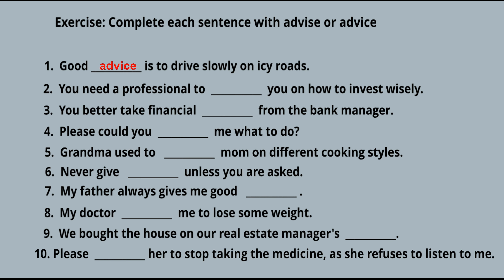Second: 'You need a professional to ___ you on how to invest wisely.' Here, we get a verb because you need a professional to tell you something. 'You need a professional to advise you on how to invest wisely' — meaning to counsel you, instruct you, or urge you. You need a professional.